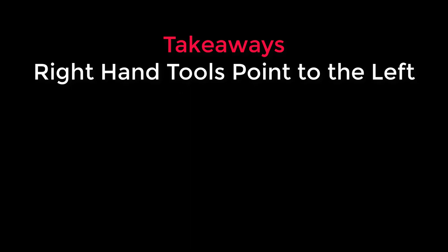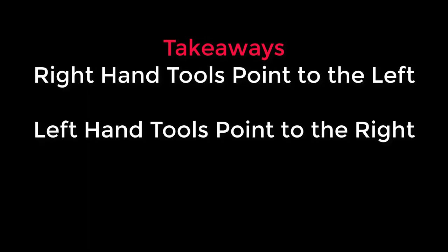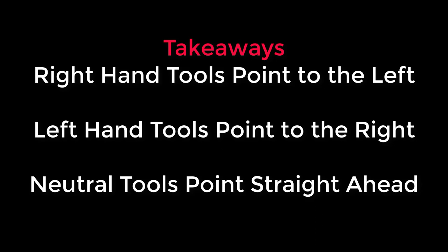Let's recap our big takeaways from this presentation. The first big takeaway is the types of tools, and we have three types: a right hand cutting tool, its tip points to the left; a left hand cutting tool, its tip points to the right; and a neutral tool, its tip points straight ahead. The last big takeaway we want to capture here is we always want to mount our tools and check that they align to a center in the tailstock before we start cutting. Thanks for watching.